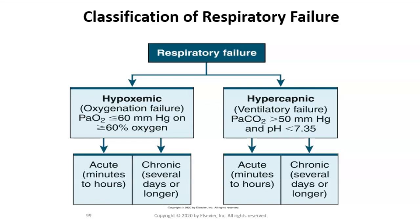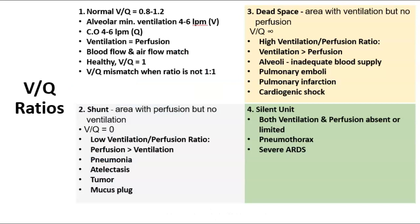The next concept is the VQ ratio. VQ stands for ventilation — the V, which is the air in and out — and Q is perfusion, the blood going round and round. We have a normal VQ ratio of 0.8 to 1.2. A ratio of one-to-one would mean ventilation and perfusion are evenly matched — so a healthy VQ is one. We accept a small range outside of that: 0.8 to 1.2, but not a very big spread.